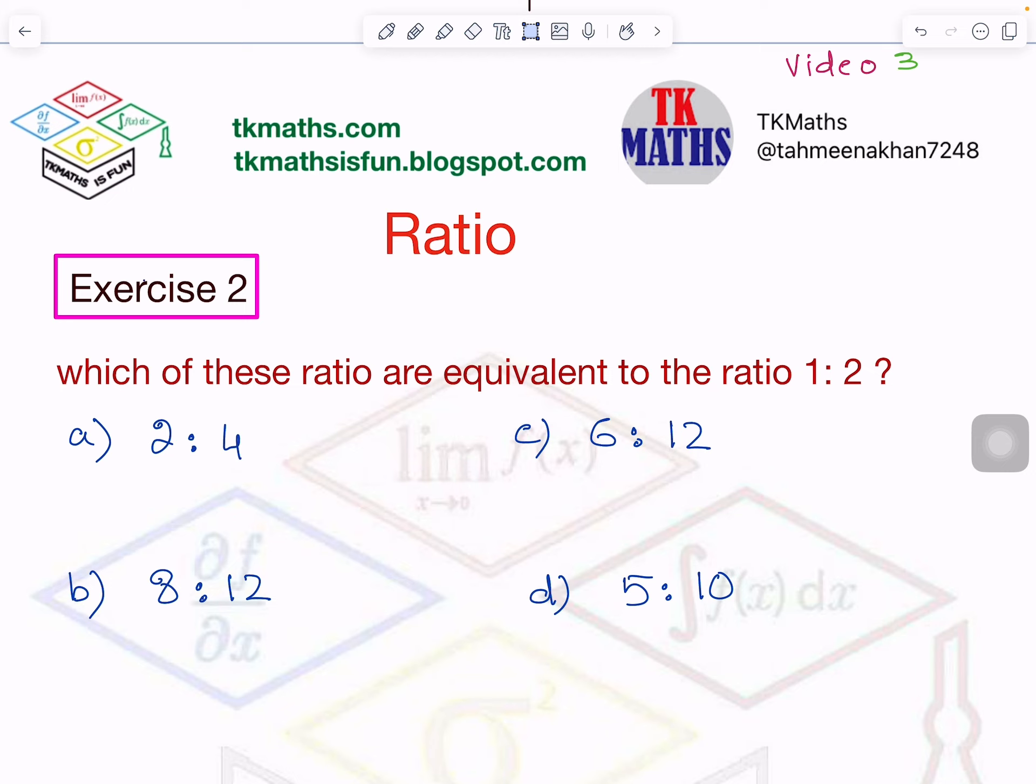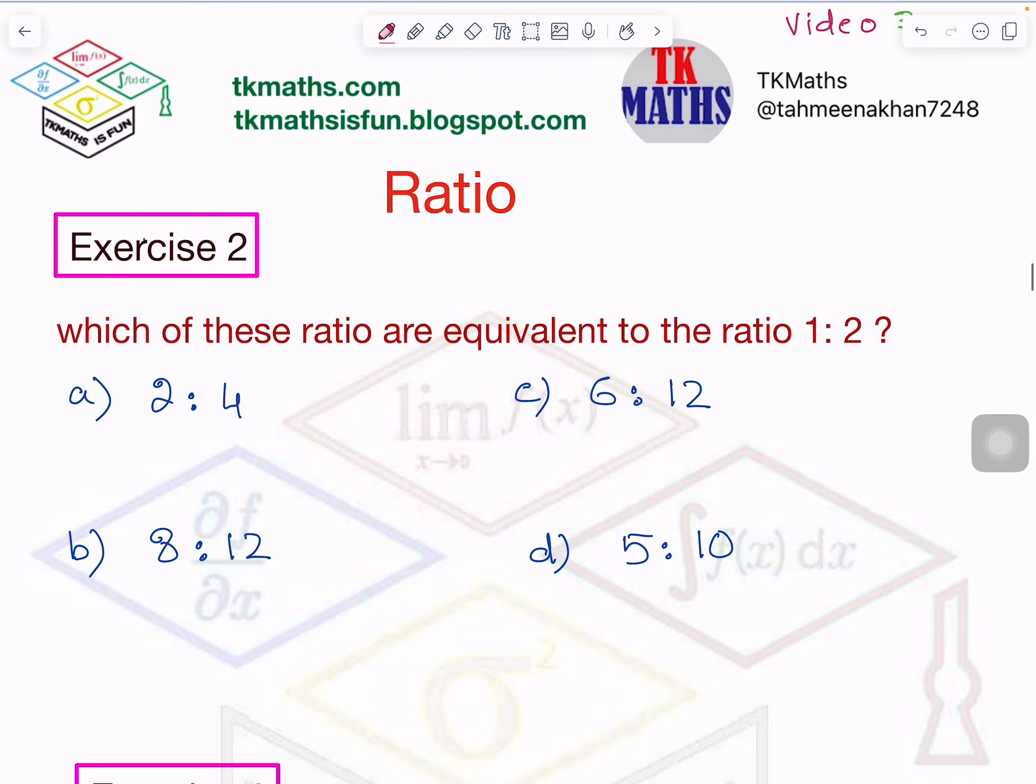So this question: which of these ratios are equivalent to the ratio 1 is to 2? What do you think, what will you do? Absolutely right, you will simplify each one of them and then you will see which ones are equal to 1 is to 2.